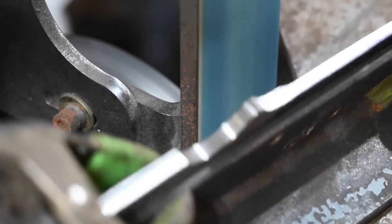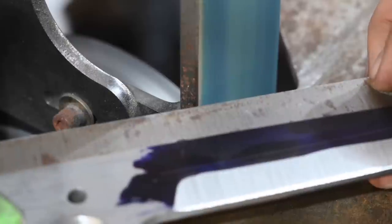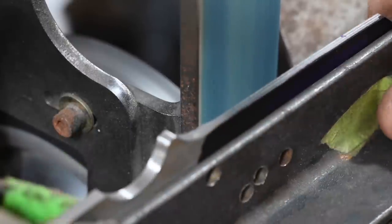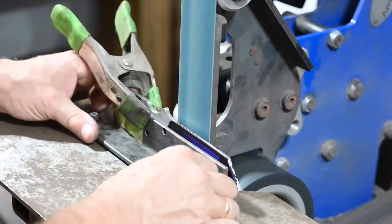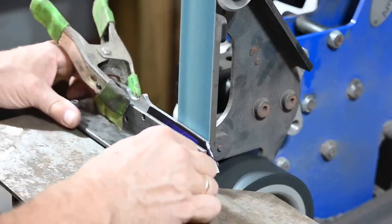Second point, don't panic if you're not perfect when you're hogging off material with a heavy grit belt like this 36-grit ceramic. Sometimes it's easier to fix things with medium grit belts. But, this leads me to my main trick.